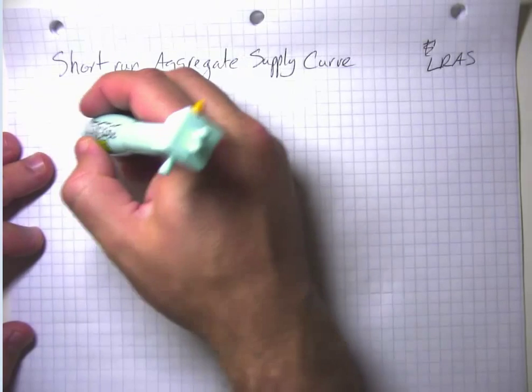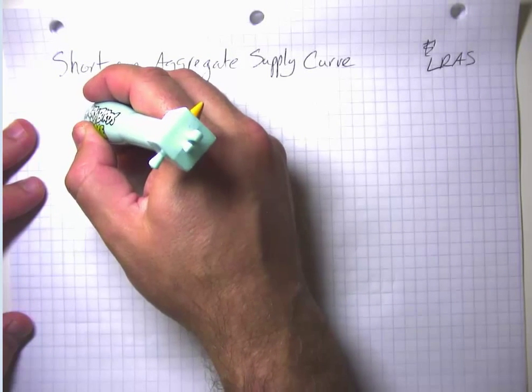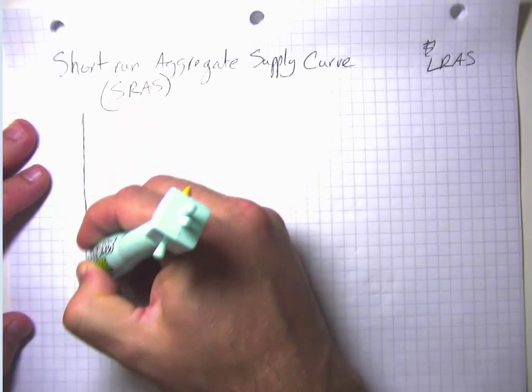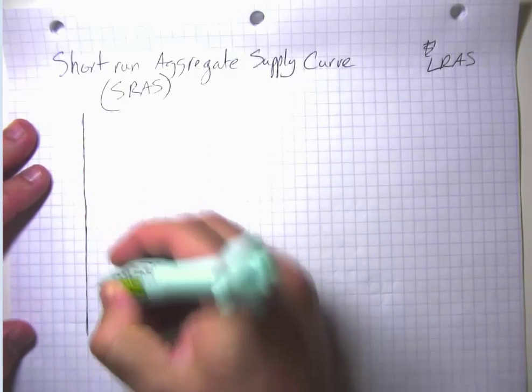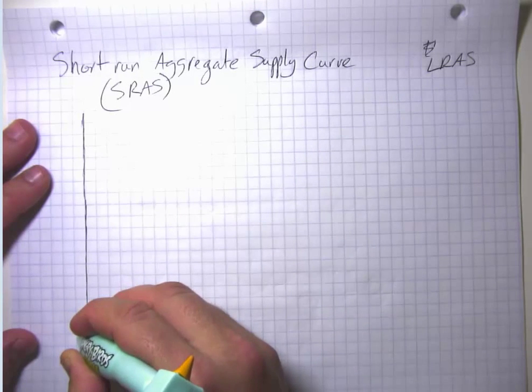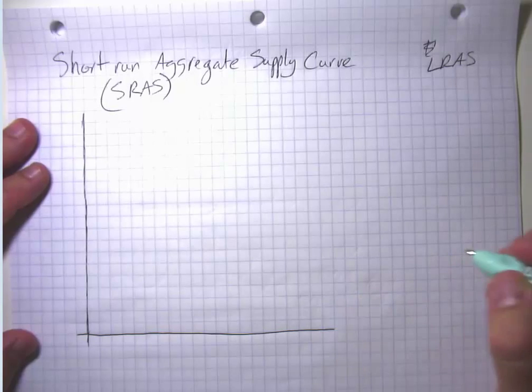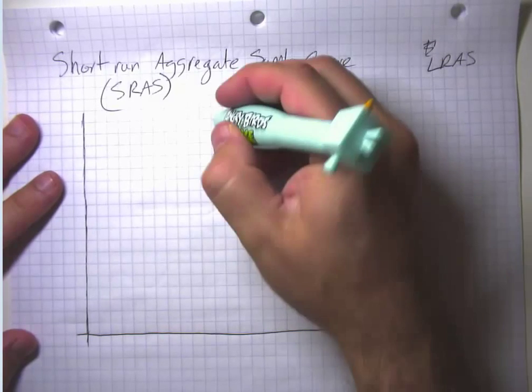So the idea here is that we don't instantly jump to this new long-run equilibrium because, as the Keynesians point out, prices and especially things like wages are slow to adjust.